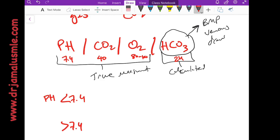If it's less than 7.4, then this is acidosis. If it's above 7.4, then this is alkalosis.